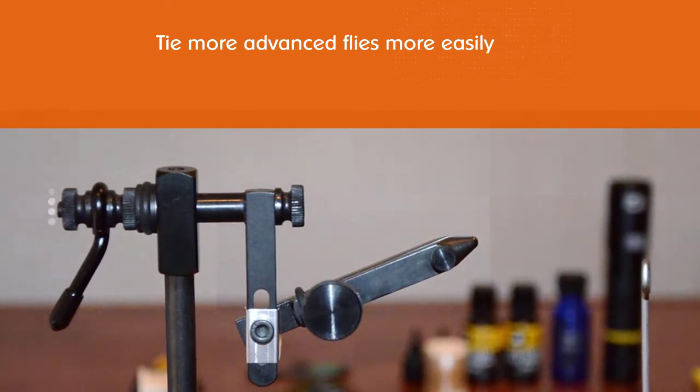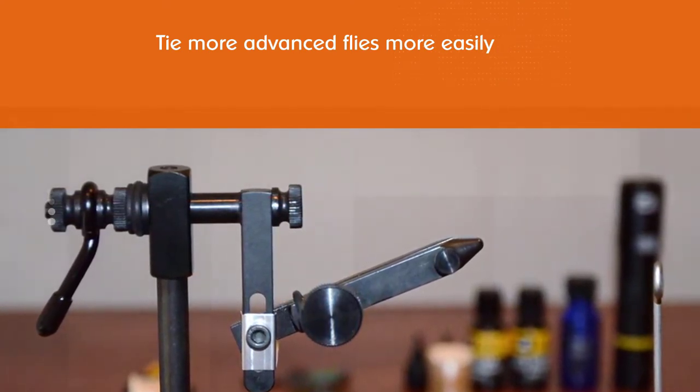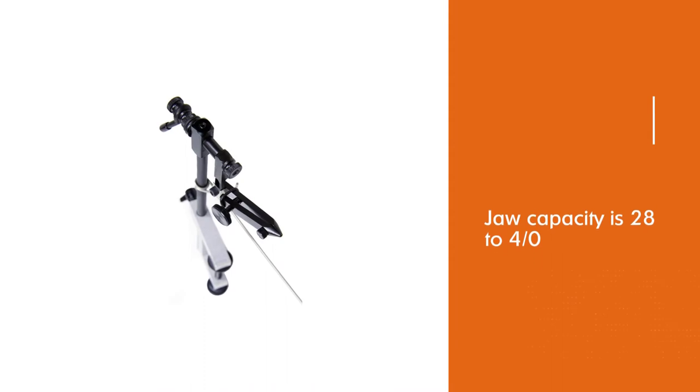The only disadvantage we found in the Griffin Odyssey Spider vice is the fact that you have to clamp it to a table. It cannot stand on its own.